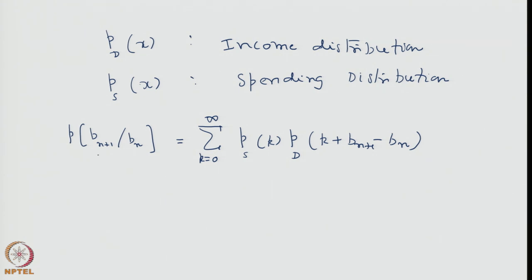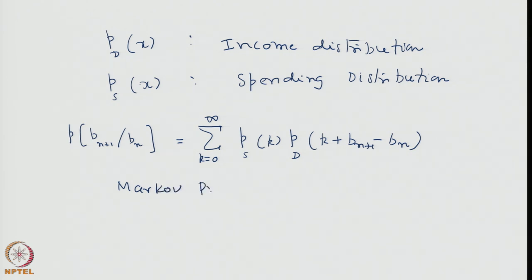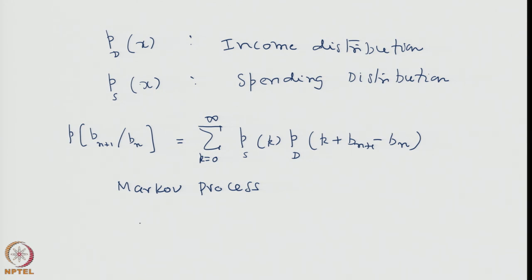We can see that this transition probability does not depend on the history — it depends only on the states B_n and B_{n+1}. Therefore, this is an example of a Markov process, because it depended only on B_{n+1} and B_n, not on some other B values. Hence it falls within our definition of the Markov process.